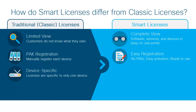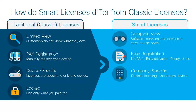Third, traditional licenses are also device-specific, meaning you can only register one license to one device. Smart licenses are much more flexible. Since licenses are pooled, they can easily move around to different devices as you process RMAs, or decide to redeploy licenses to a different device. And finally, traditional licenses only give you access to the licenses you have paid for. Smart licenses allow customers to burst and go temporarily into an overuse situation, allowing licensing issues to be resolved later.